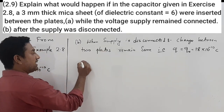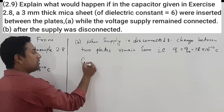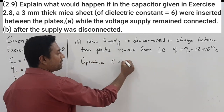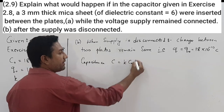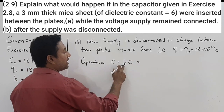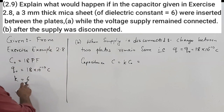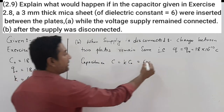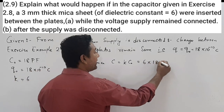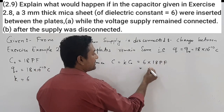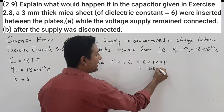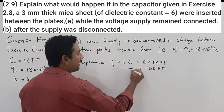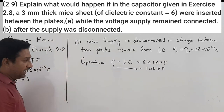For Case 2 (supply disconnected), the capacitance is still C = k × C₀. The dielectric constant k is 6 and initial capacitance C₀ is 18 picofarad, giving a new capacitance of 108 picofarad.